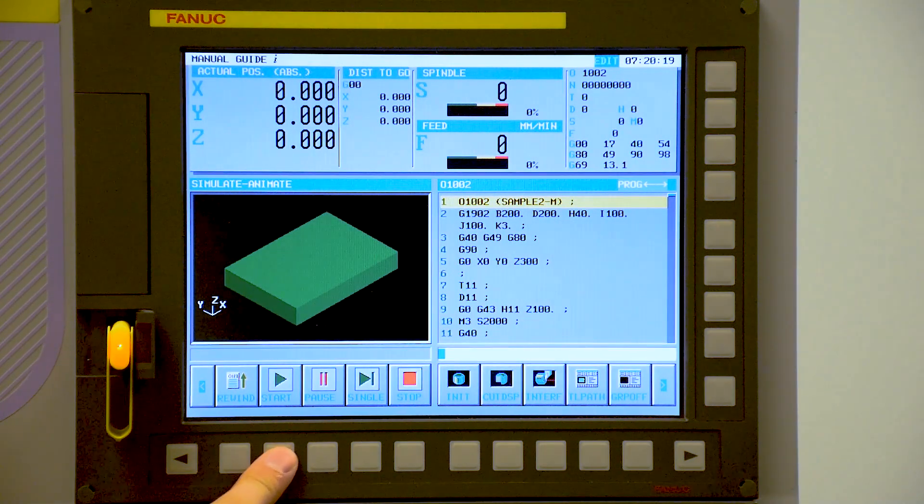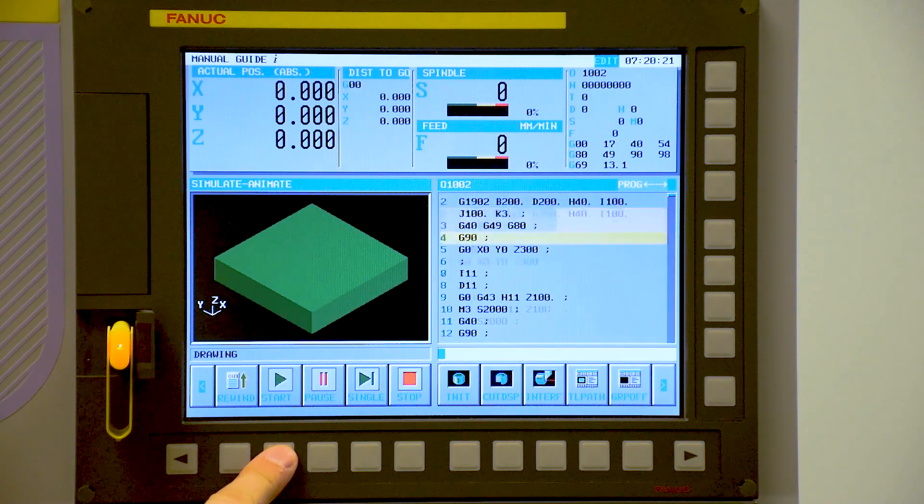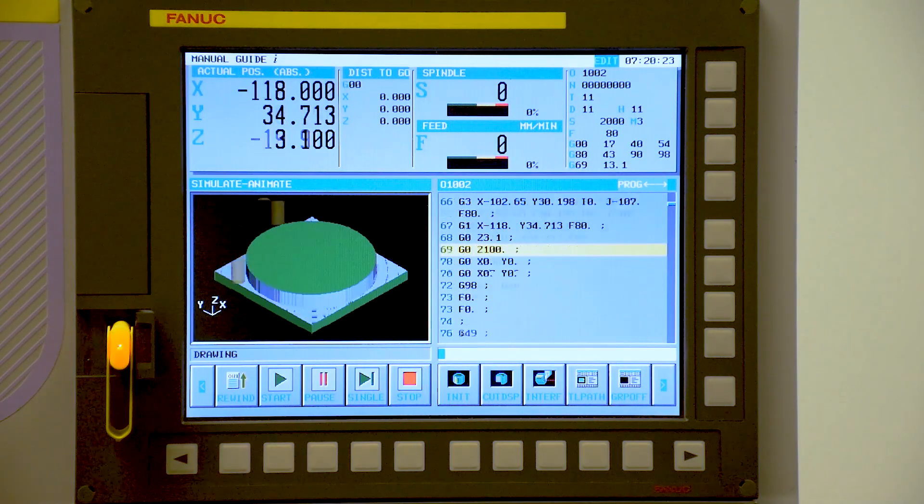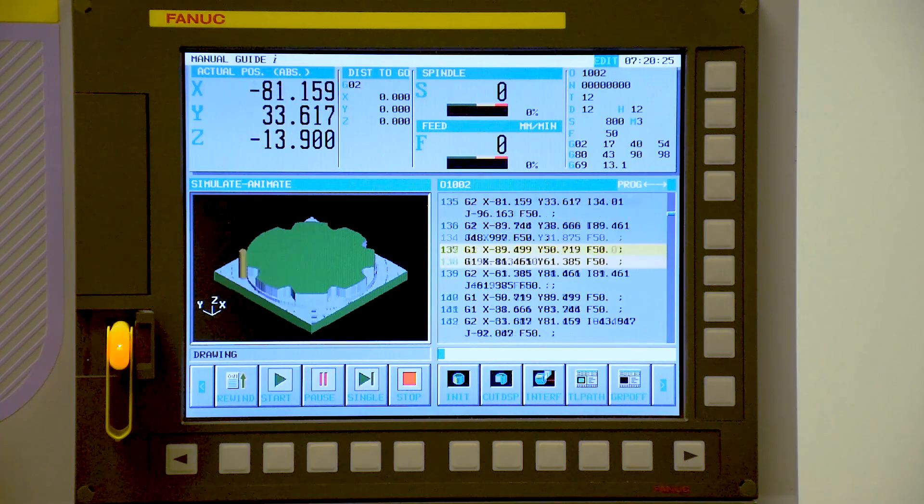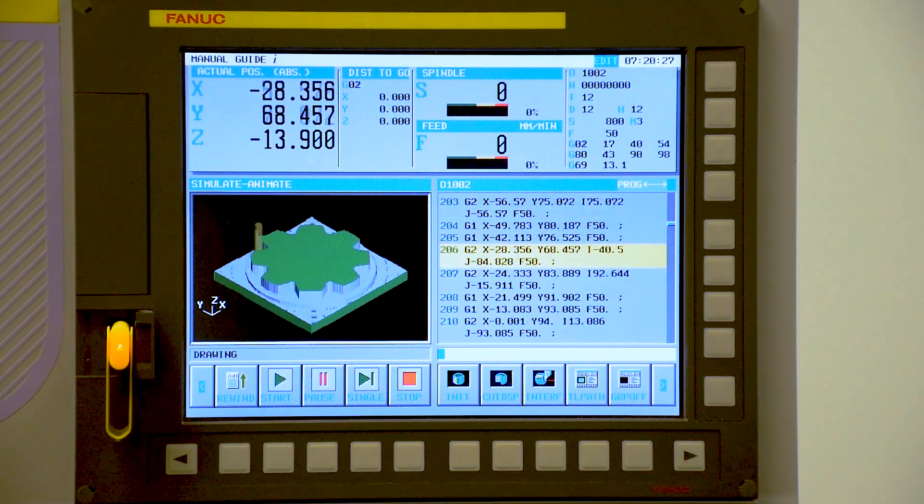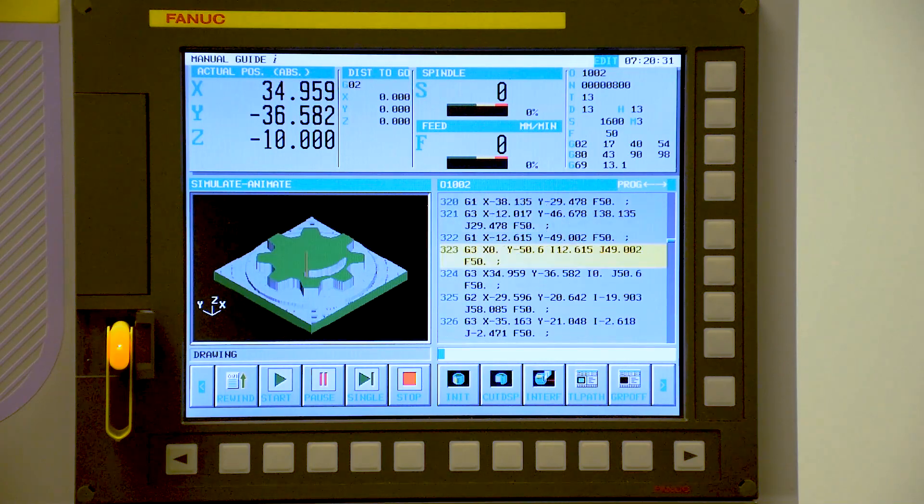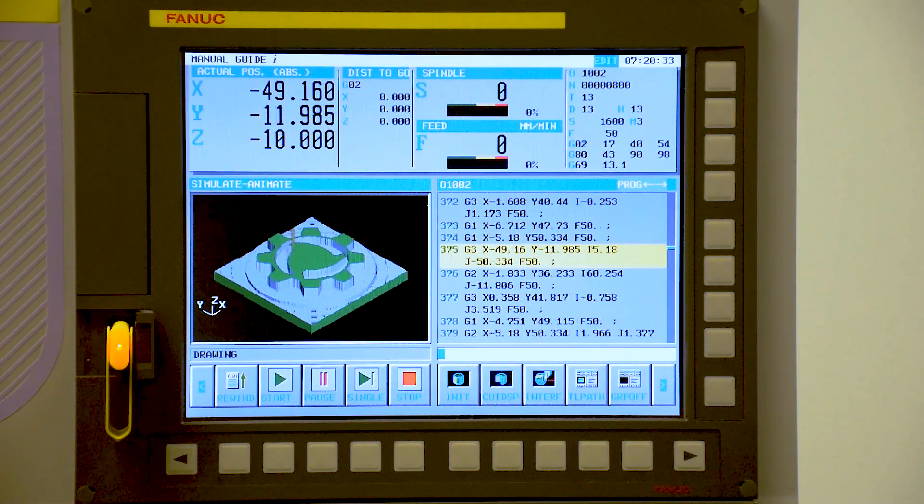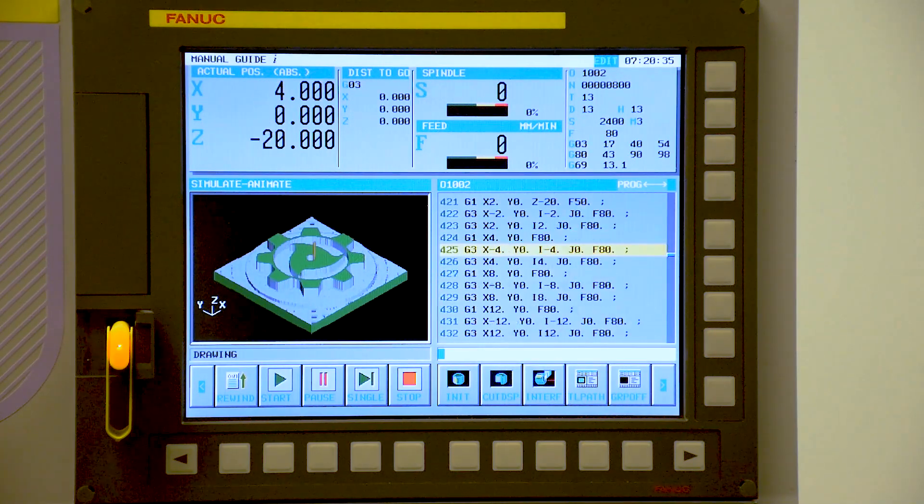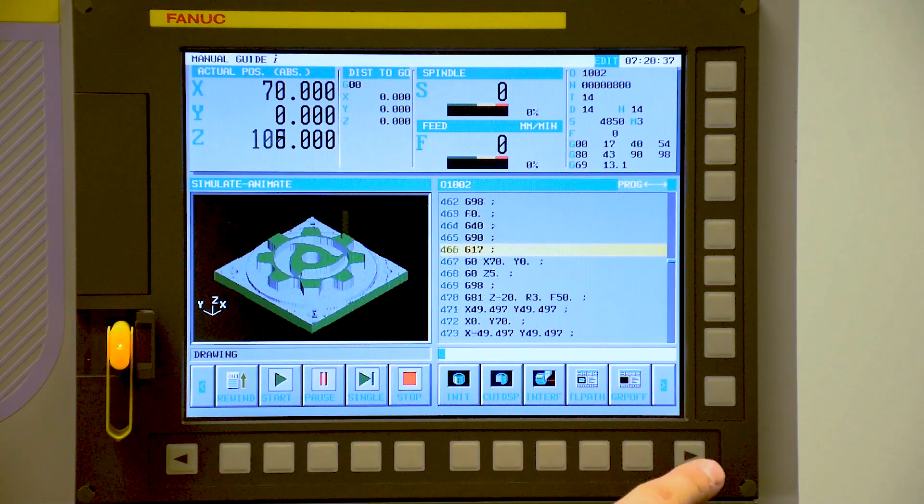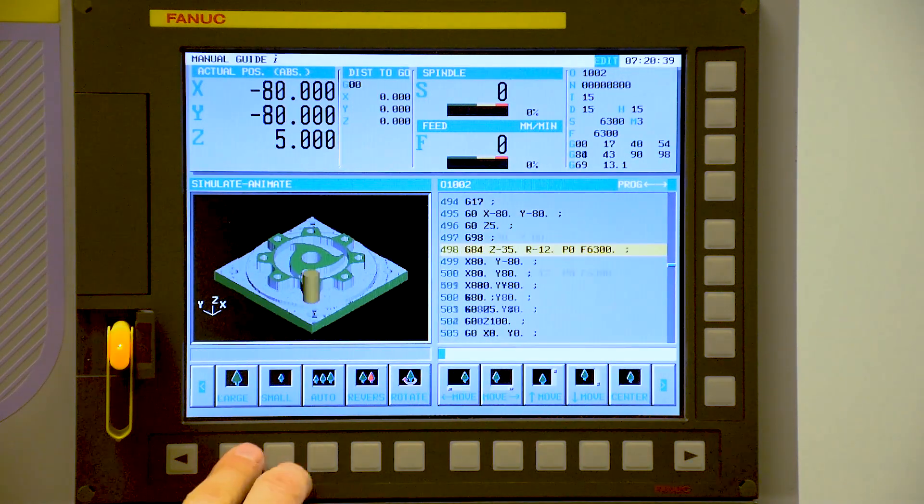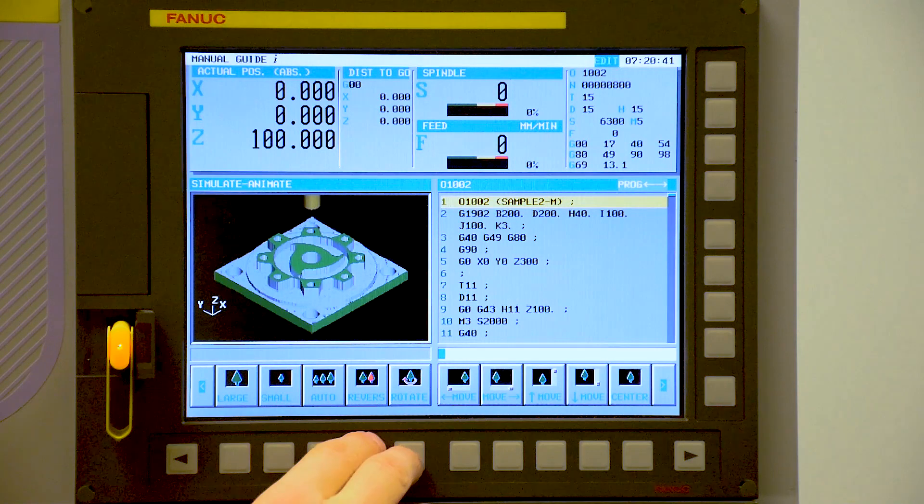This should be a rectangular block. So when we get to that line, you'll see the image change. This will go through very quickly. We're still in edit mode. Now we can see the part program execution. This isn't real time, this is just a theoretical go through the part as quickly as possible. We can change the size, zoom in, zoom out, and we can also rotate.